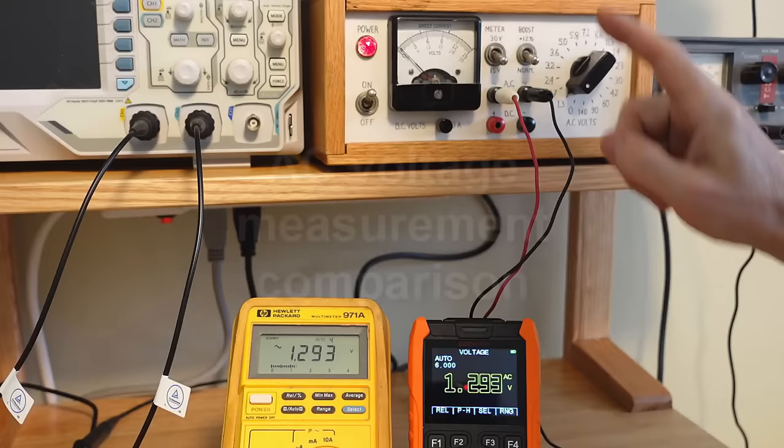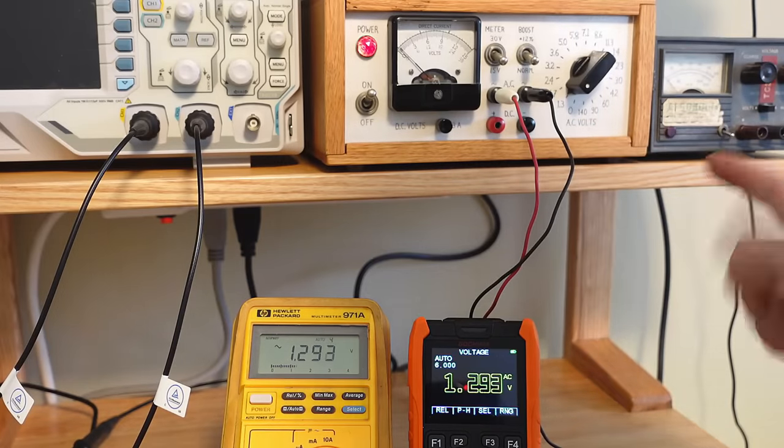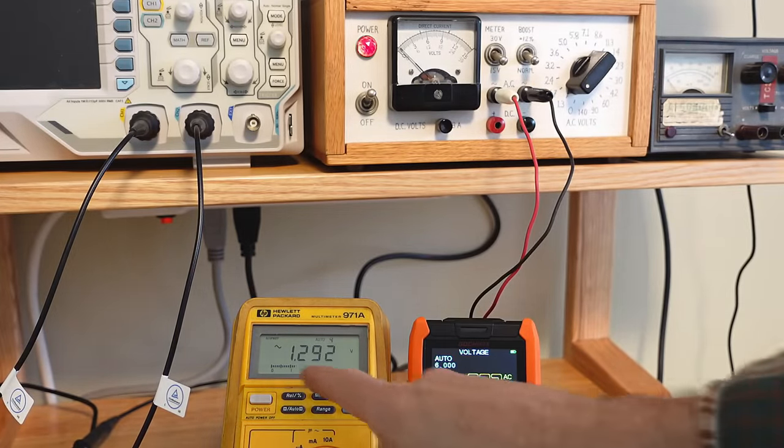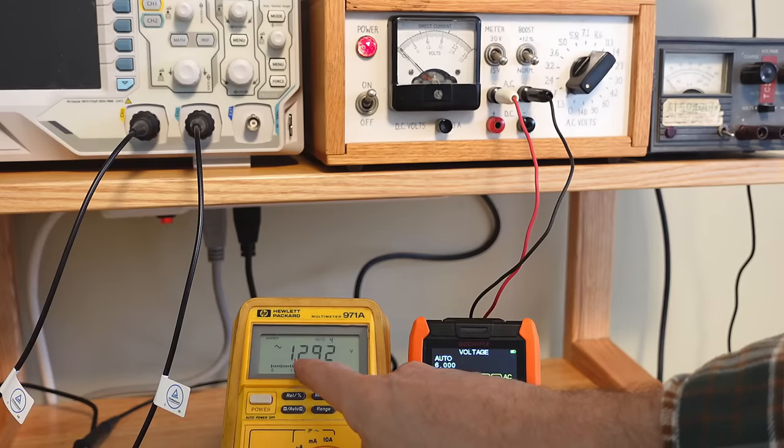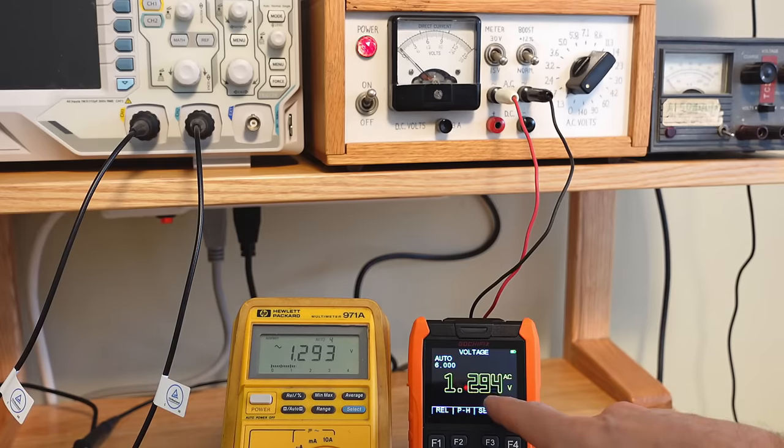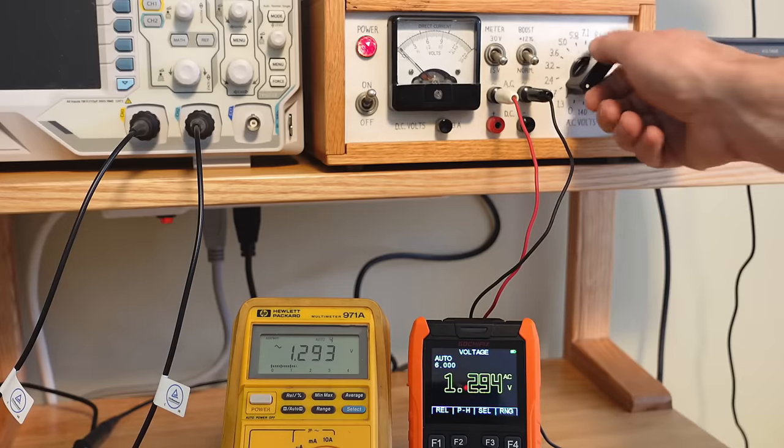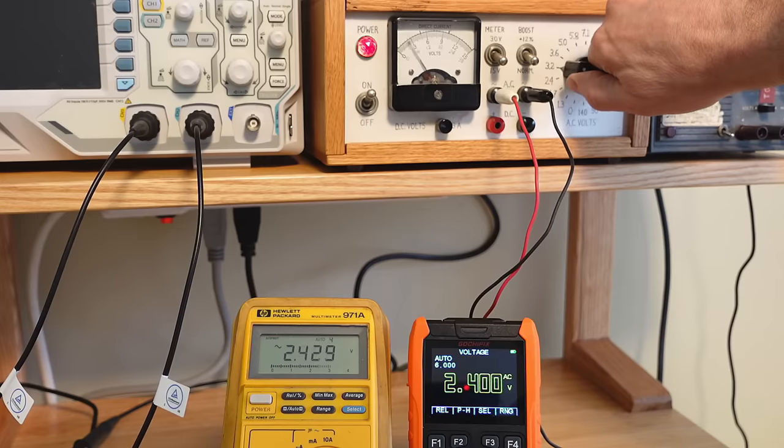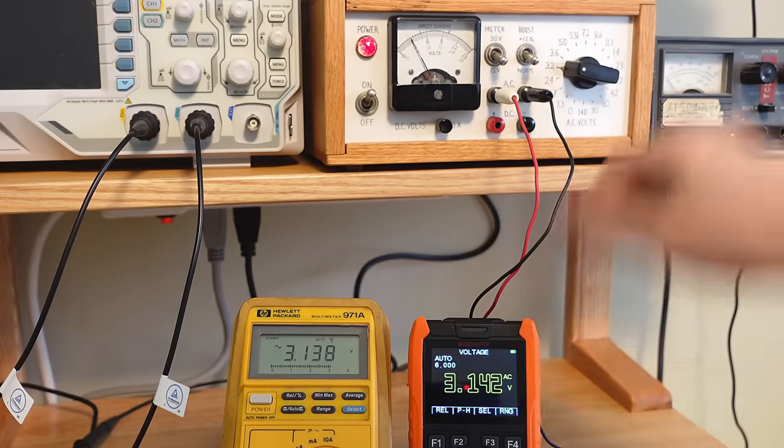So trying to measure the 120 hertz ripple from the DC unregulated didn't seem to work that well. But now just measuring the AC voltage, this is my good meter - 1.29 volts. 1.29. They are very close. And let's just step through the ranges. Very close. I guess that means I can trust both of these.